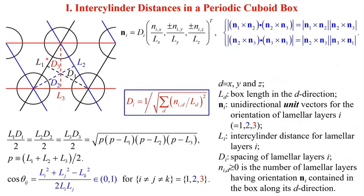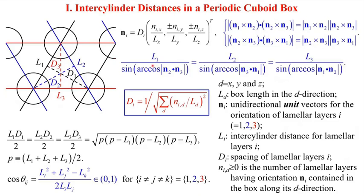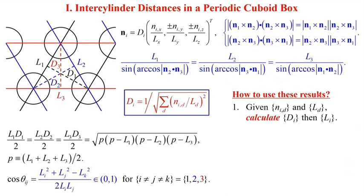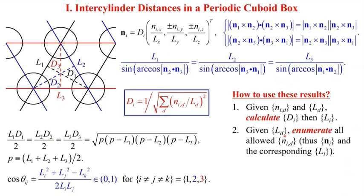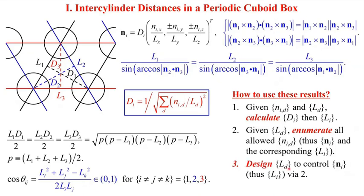The law of sines for the triangle gives these equations. So, for a configuration of cylinders specified by N_id in a cuboid box of lengths L_d, we can use these formulas to calculate D_i, then obtain the inter-cylinder distances L_i. This is confirmed with the three examples shown on the previous slide. For a given box, we can enumerate all allowed N_id, thus the cylinder orientations represented by N_i and the corresponding L_i that can fit in the box, satisfying all the constraints shown in blue. This further allows us to control the cylinder orientation and inter-cylinder distances by designing the box lengths.